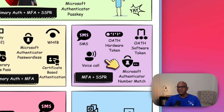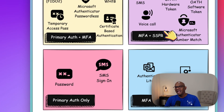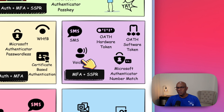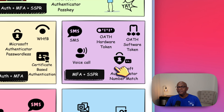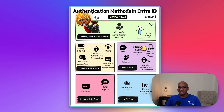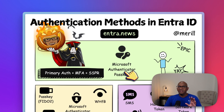Then you have the fourth category: auth methods which you combine with the primary auth, like a username and password, and then do an MFA — which includes SMS, voice call, hardware token, software token on the app, or number match in the Authenticator app. These can be used with the self-service password reset feature today. Finally, the Authenticator passkey — the Microsoft Authenticator app with the new passkey feature — lets you do all three things together.